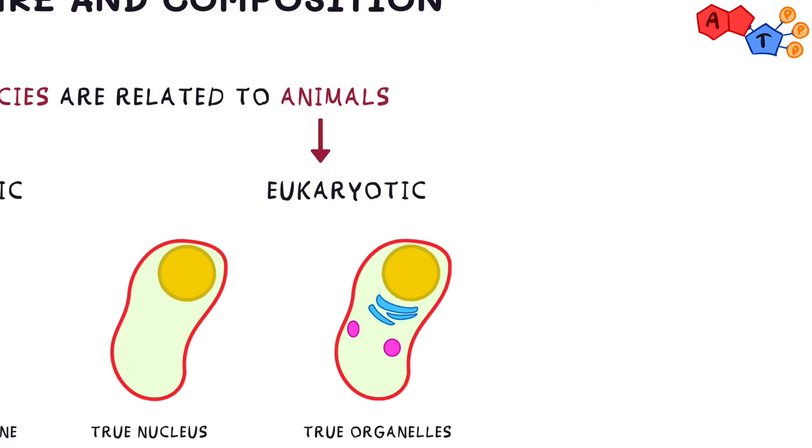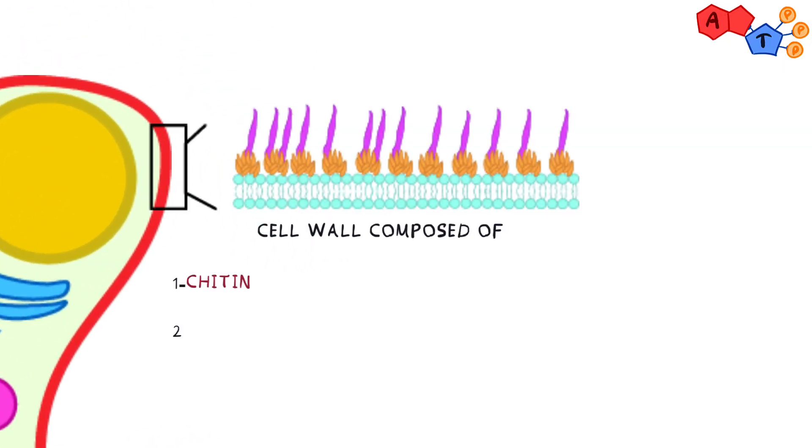They also consist of a cell wall composed of chitin, beta-glucans which are polysaccharides made of glucose monomers, and ergosterol. A clinical significance worth noting here is that the synthesis of beta-glucans is targeted by several antifungal drugs.